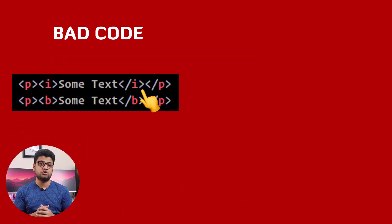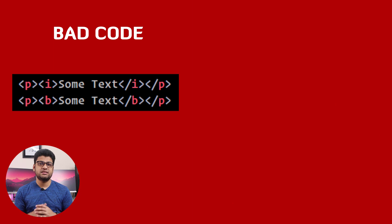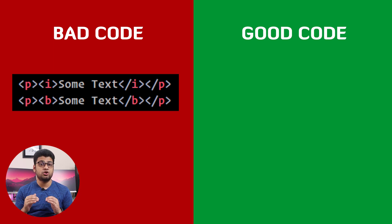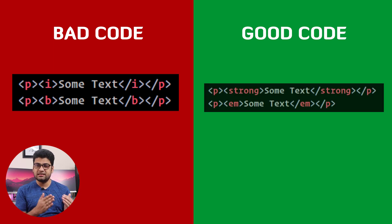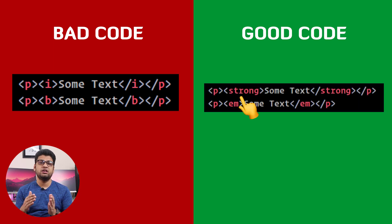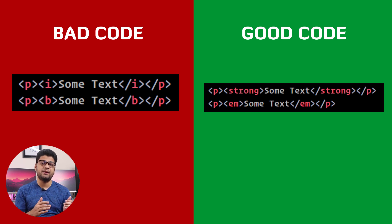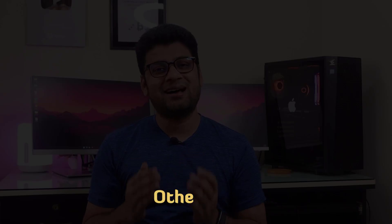Number three: avoid the b tag for bold and the i tag for italic. These were mostly used in HTML version 4. In HTML5, instead of b, use the strong tag, and instead of i, use the em tag.